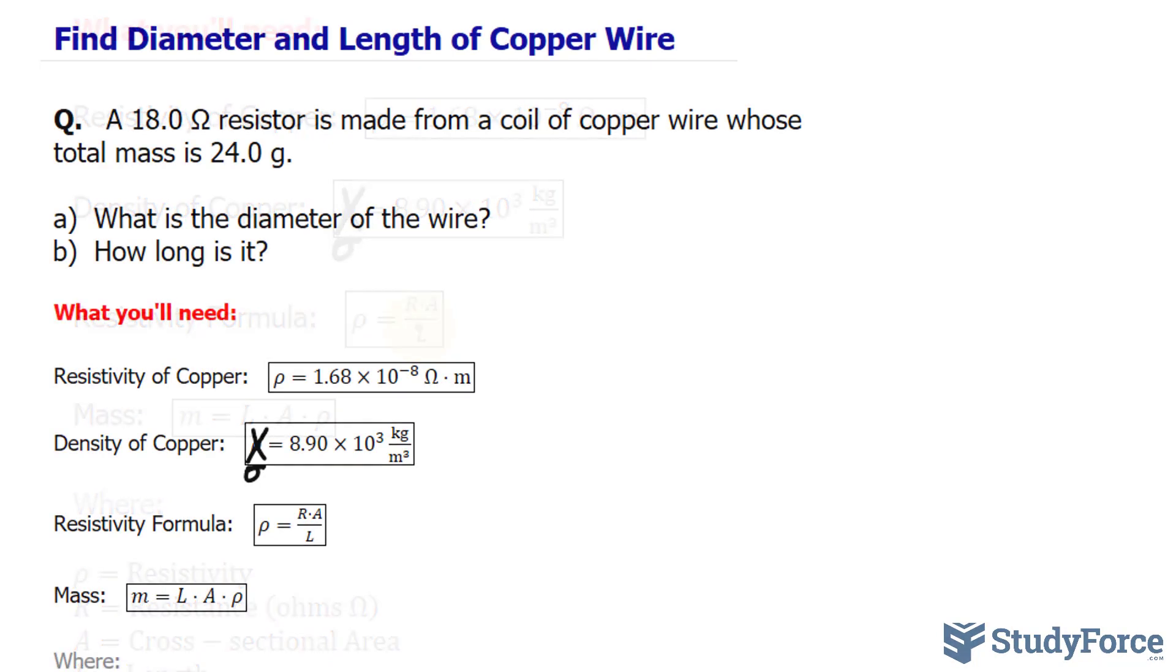Now with that being said let's go ahead and start answering this. I'll rewrite the formula up here. Resistivity is equal to the resistance which I'll replace with 18.0 ohms times the area which we don't know. We're actually going to look for the area eventually because it will help us find the diameter. All over the length.